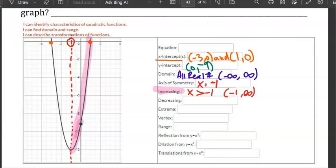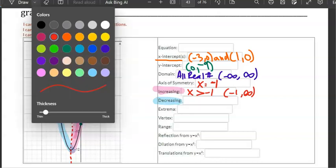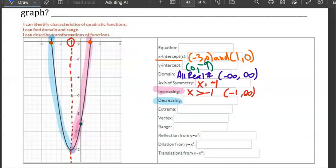And then it's decreasing on the left side when x is less than negative 1, so negative infinity to negative 1.